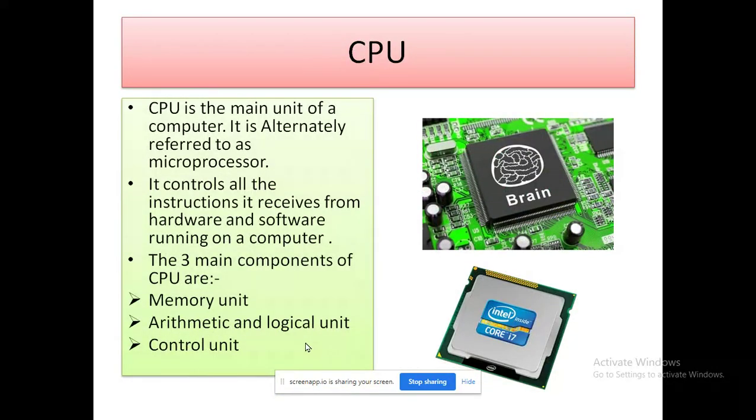This is the most important part of our computer system, the brain of the computer. CPU is the main unit of a computer. It is alternately referred to as microprocessor. It controls all the instructions it receives from the hardware and software running on a computer.